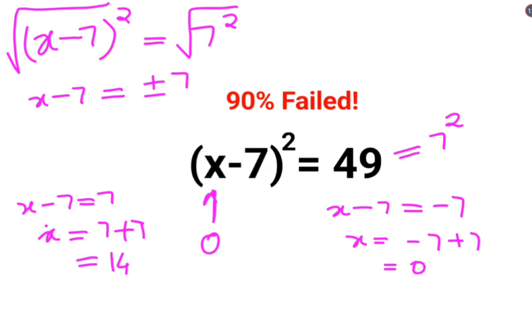Here we can say either the value of x is 0 or 14. A lot of people missed out on one of the values and that is why they got it wrong.